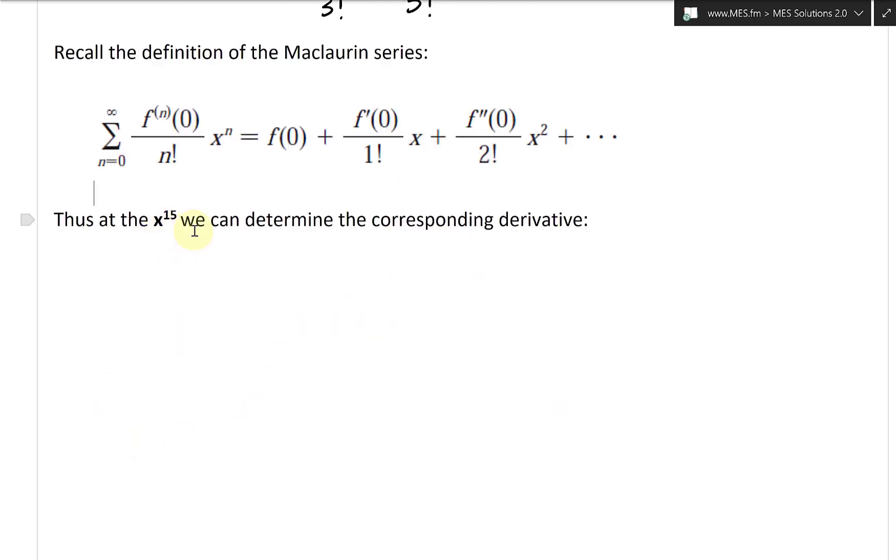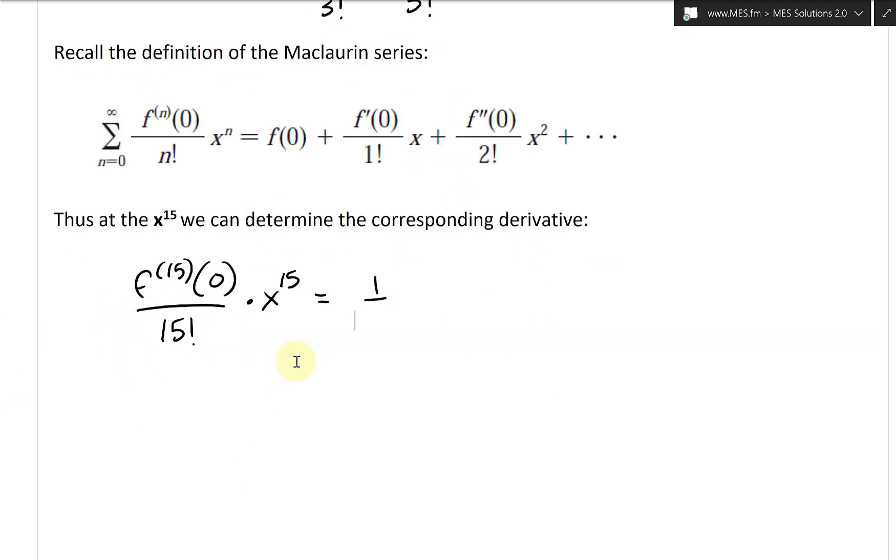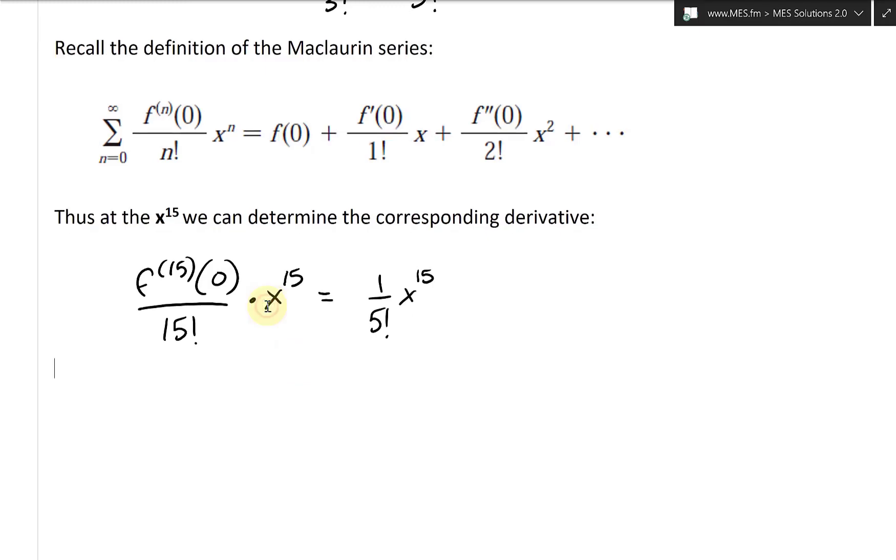Thus, at the x to the power of 15, we can determine the corresponding derivative. So f of the 15th derivative at zero, divide this by 15 factorial, times it by the x to the 15. Now, this equals to one over 5 factorial times it by x to the power of 15 like that.